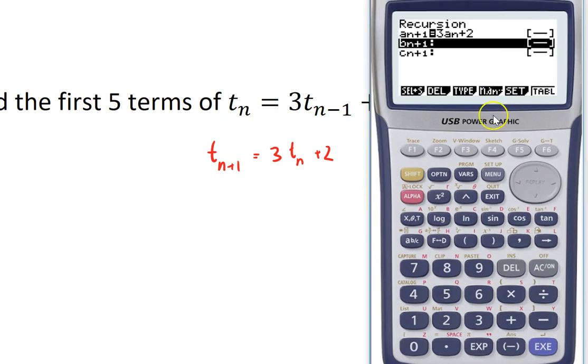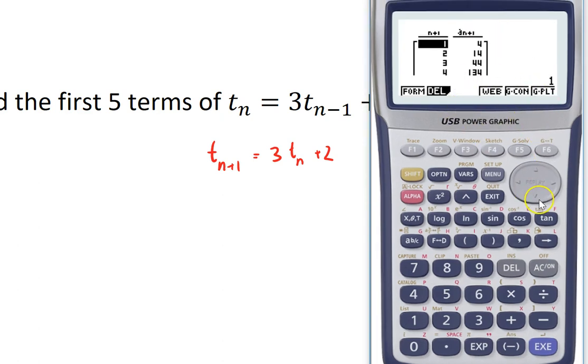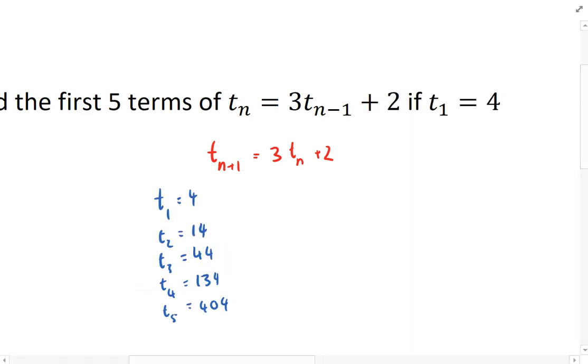And then finally, I can ask it for a table. So I just click the little table button here. And there are my formulas. 1, 4. So the first term is 1. Sorry, the first term is 4. The second term is 14. Third term is 44. And so on. My terms there.